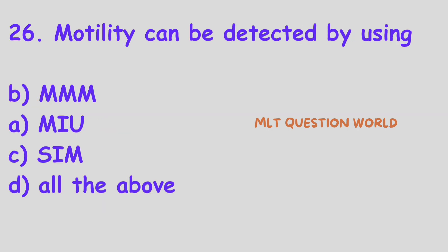Question number 26. Motility can be detected by using: Option A, MMM or Mannitol Motility Indole media; Option B, MIU or Motility Indole Urea; Option C, Sulfur Indole media; Option D, All of the above. The right answer is Option D, All of the above. All of these methods can be used for motility testing.